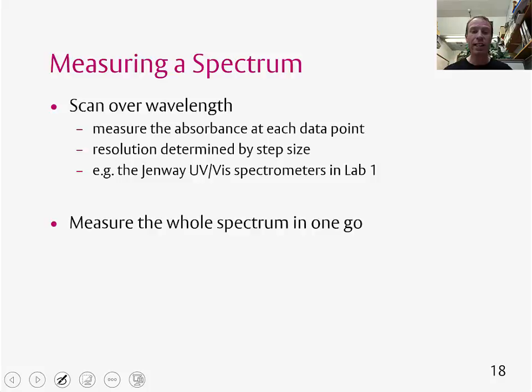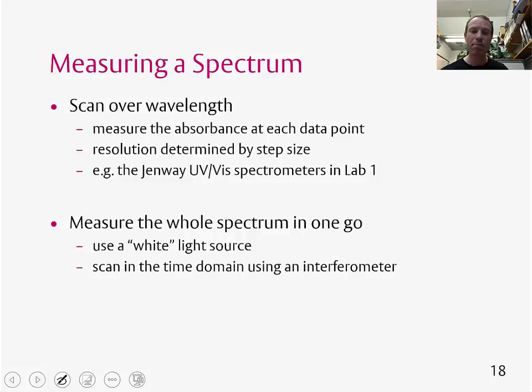The other way of doing it is to measure the whole spectrum in one go. And this works by using a white light source. And instead of measuring the absorbance at each frequency or each wavelength, you actually measure the absorbance as a function of time using a so-called interferometer. And then you can Fourier transform this interferogram to get the spectrum.